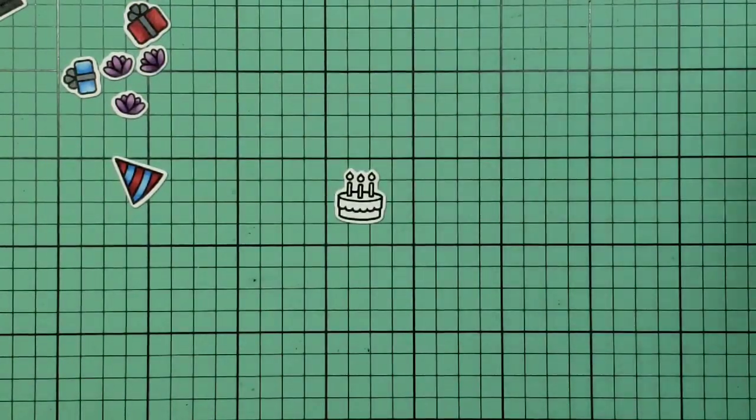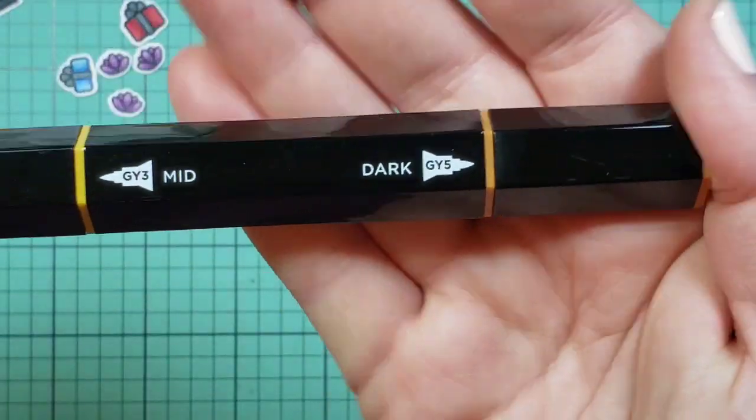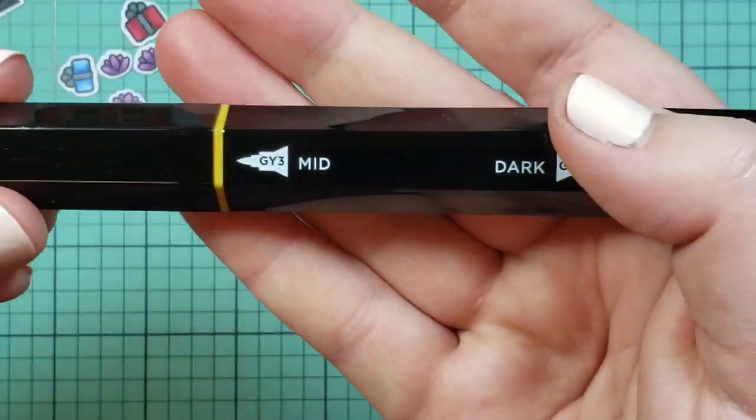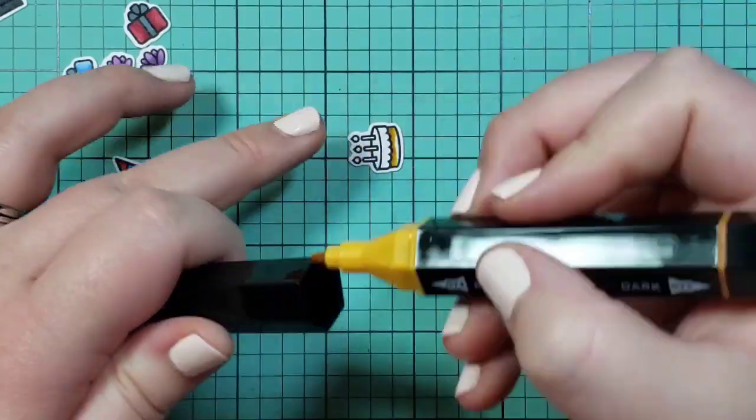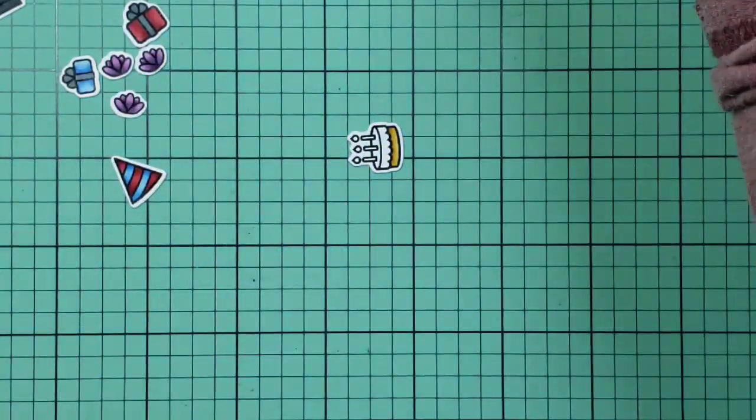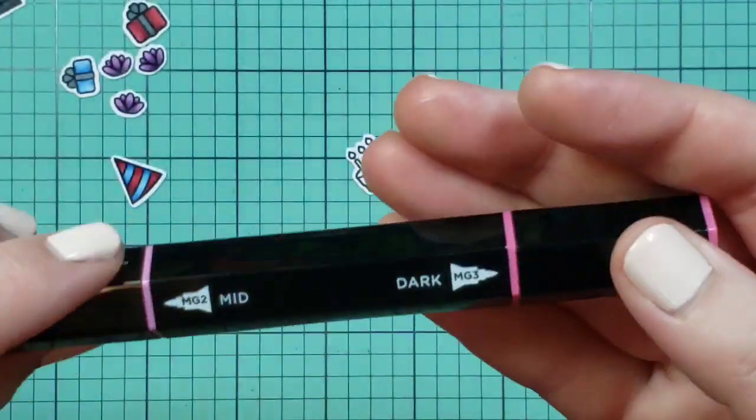For the birthday cake, for the cake portion, I'm picking gold yellow, which just comes off as like a cooked vanilla cake to me—what the top would look like if you were to cook it in the oven. I'm just blending all three of those, and then I'll be using the lighter half, the magenta blend, to color in the frosting.